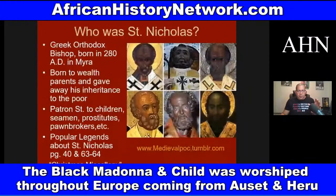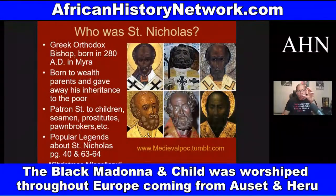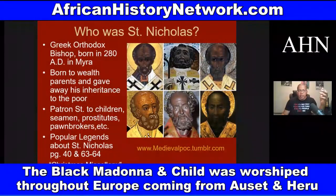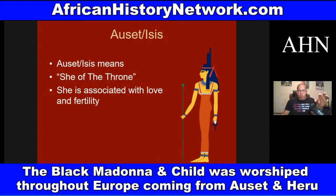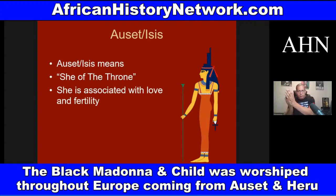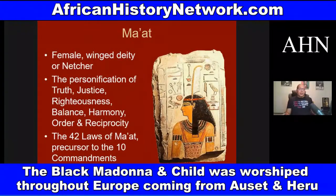We go through and look at some of the Netteru. With Christianity, the saints — especially the patron saints — are going to replace the Netteru, because different Netteru had different attributes. When we look at Aset, who the Greeks called Isis — 'Aset' means 'she a throne' — because who sat on the throne in ancient Kemet was determined matrilineally, through the woman's side of the family. Aset was associated with love and fertility. Ma'at was the Netteru who was the personification of truth, justice, righteousness, balance, harmony, order, and reciprocity.